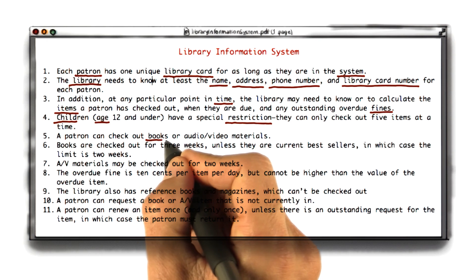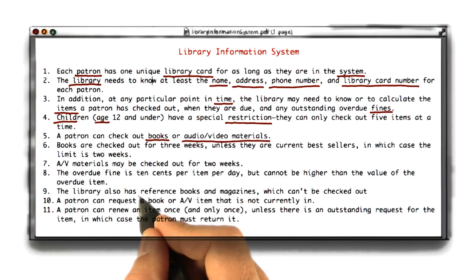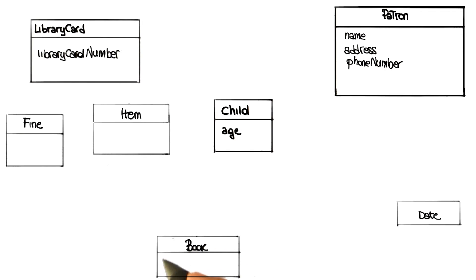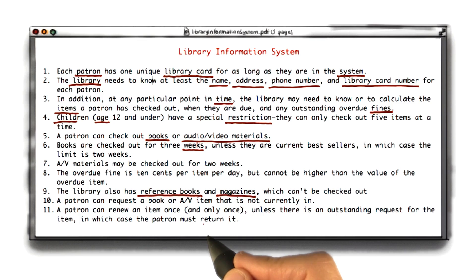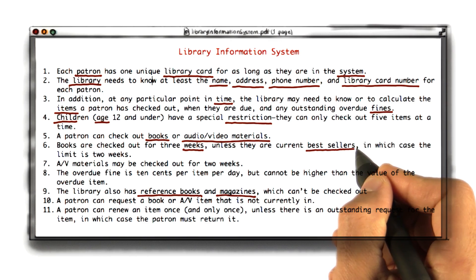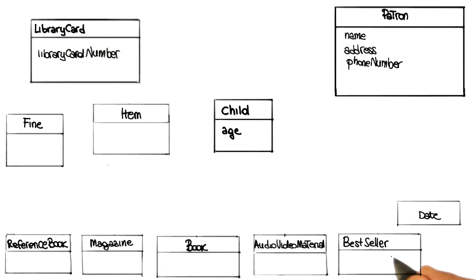Books and audio/video materials are things that patrons can check out — those are some of the items. There are also two more down here: reference books and magazines. They can't be checked out, but they're definitely in the library. So I'm going to represent all of those as classes: books, audio/video materials, reference books, and magazines. Week was already represented by the general concept of time, so week will be covered by the date class. Best sellers are also items that can be checked out, so I'll represent those as a class as well — an additional item that is relevant for the library.